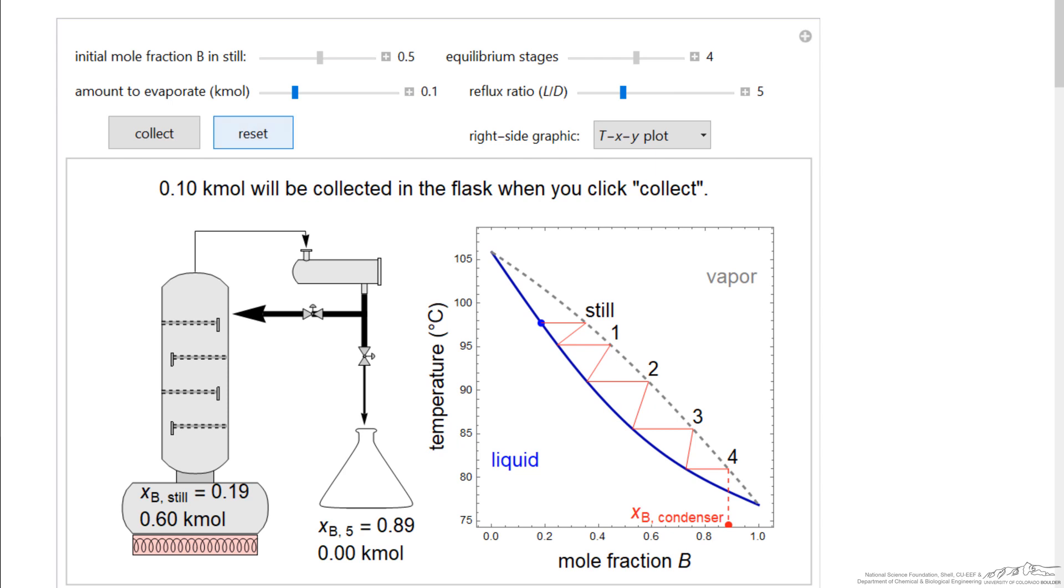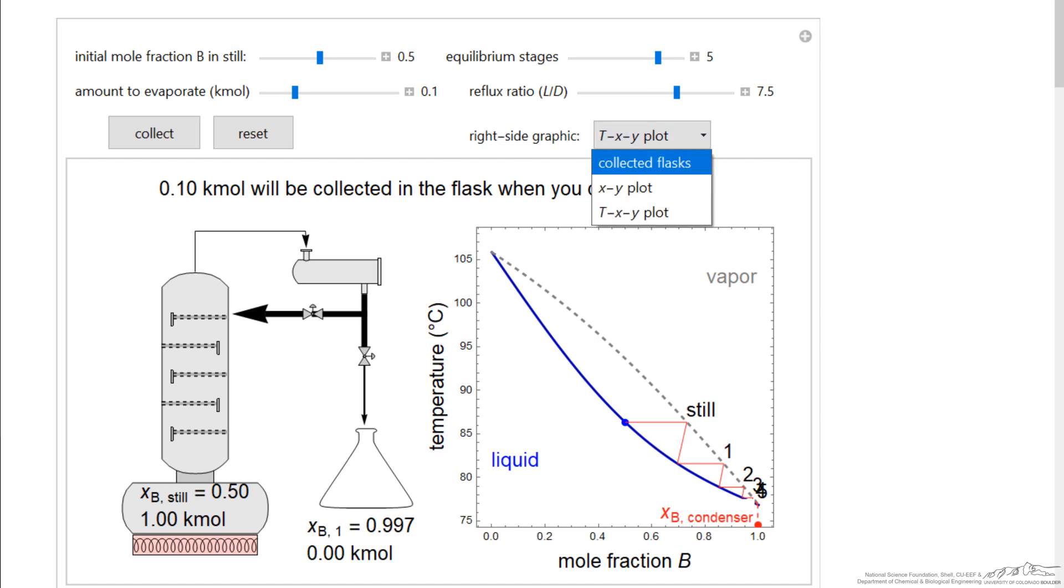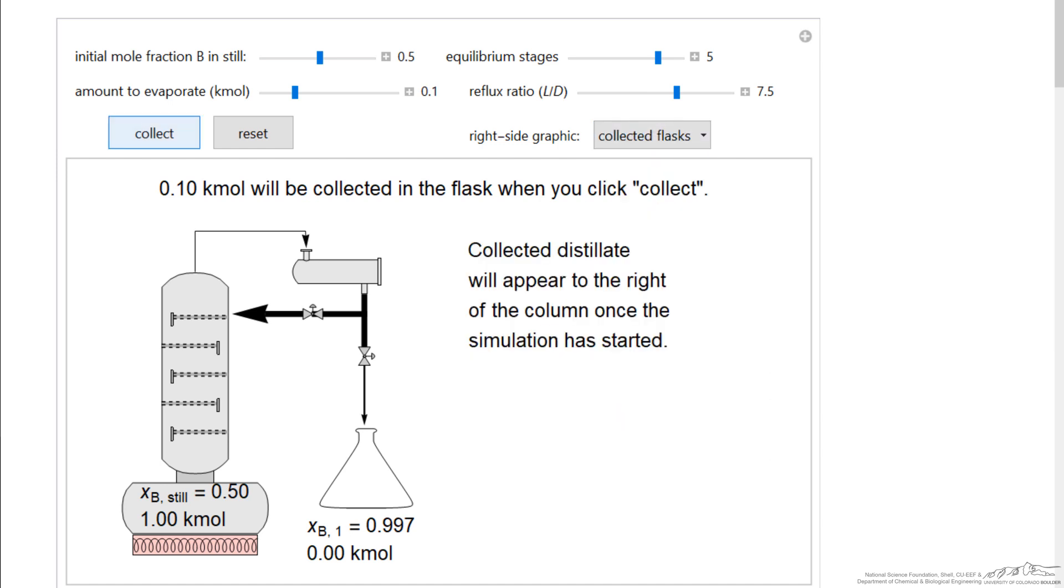Let's reset this. We can get better separations by increasing the number of equilibrium stages and increasing the reflux ratio. And so I'm going to display the flask, and let's collect more.